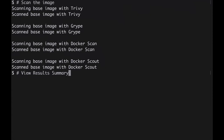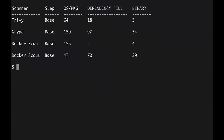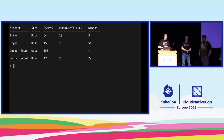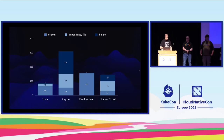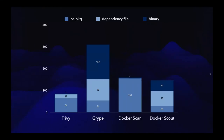Let's scan the image with Trivy, Grype, Docker Scan, and Docker Scout and check the results in summary format. We got some findings. Looking at this on a graphical display, we can see that the four different scanners run on the same image produce wildly different numbers of results. Why is that? Well, it turns out they don't always work the same way. Let's break it down a little bit.